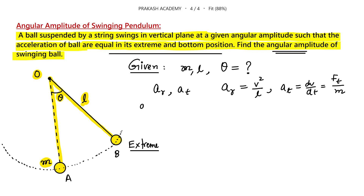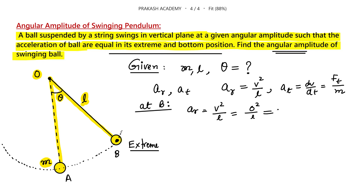Let us first discuss point B, the extreme position. The radial acceleration there is V²/L. Since this is the extreme position, velocity is zero — otherwise the ball would go further and this would not be the extreme position. So radial acceleration at B is 0²/L = 0.